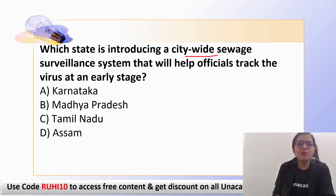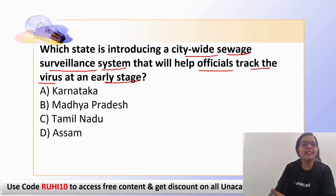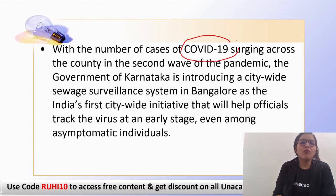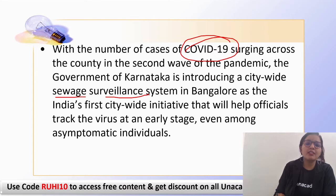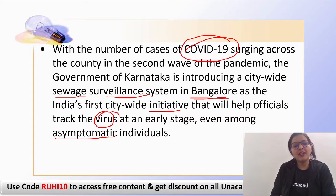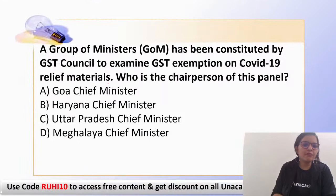The next question: which state has introduced a city-wide sewage surveillance system to help officials track the COVID-19 virus at an early stage? The correct answer is Karnataka. Due to the increase in COVID-19 cases, the Government of Karnataka is introducing a sewage surveillance system in Bangalore — India's first such initiative — which will detect the COVID-19 virus at an early stage, even in asymptomatic individuals who show no symptoms.